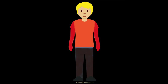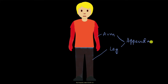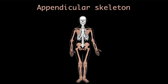Our arms and legs are our appendages. The bones that make up these appendages are called the appendicular skeleton. All of these bones — the arms, the legs, and the bones that connect them with the rest of the skeleton — make up the appendicular skeleton. In this video, we will explore how the different bones make up the appendicular skeleton and what they are called.